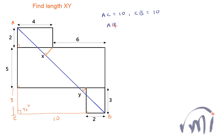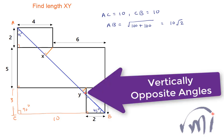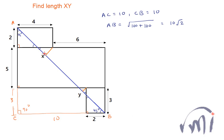The length of AB will be equal to the square root of 10 squared plus 10 squared, that is the square root of 100 plus 100, which equals 10√2. Since AC and CB are both 10, triangle ABC is an isosceles triangle, where this angle is 45 degrees and this angle is also 45 degrees. This means this tiny angle is also 45 degrees, and the third angle of this right angle triangle is also 45 degrees.